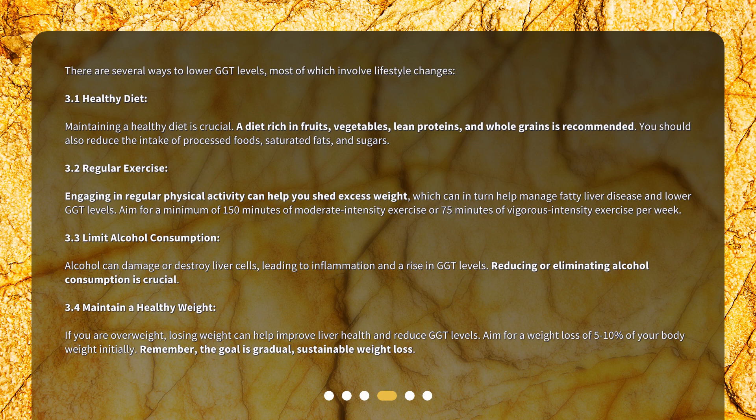Alcohol can damage or destroy liver cells, leading to inflammation and a rise in GGT levels. Reducing or eliminating alcohol consumption is crucial. If you are overweight, losing weight can help improve liver health and reduce GGT levels. Aim for a weight loss of 5-10% of your body weight initially.